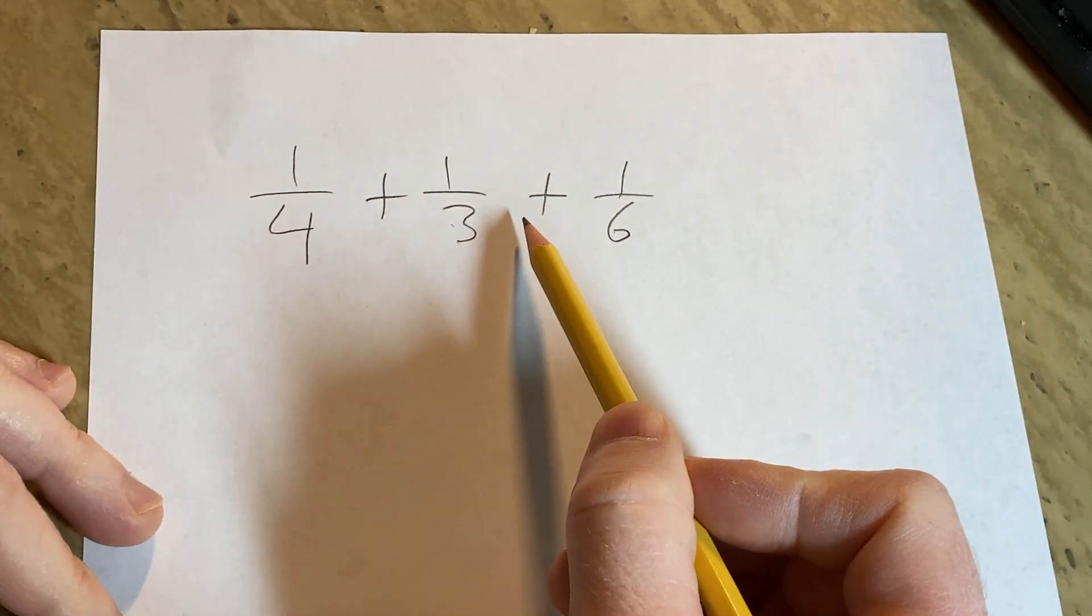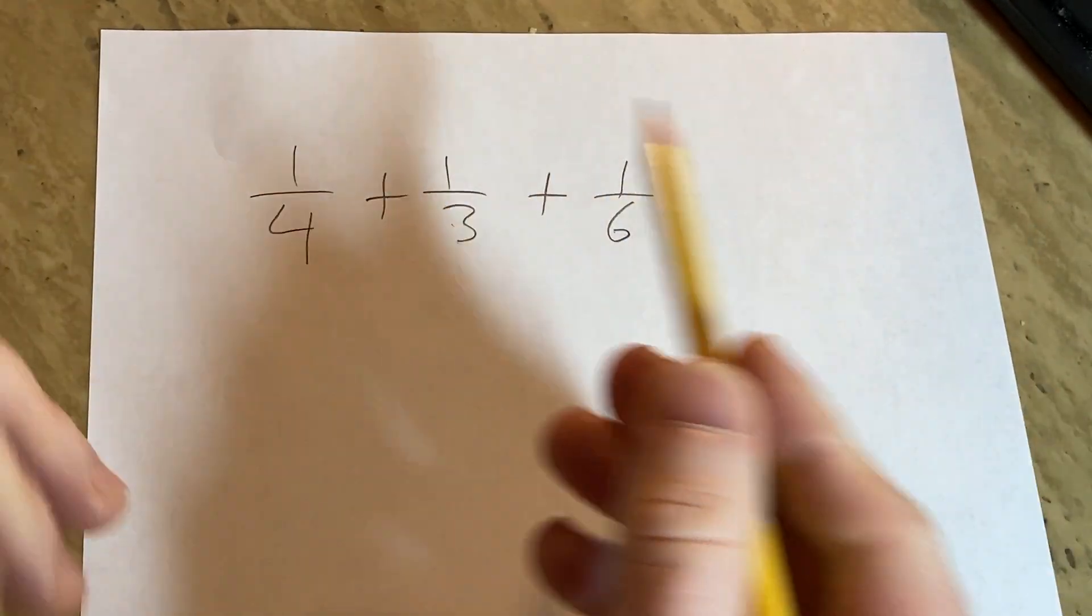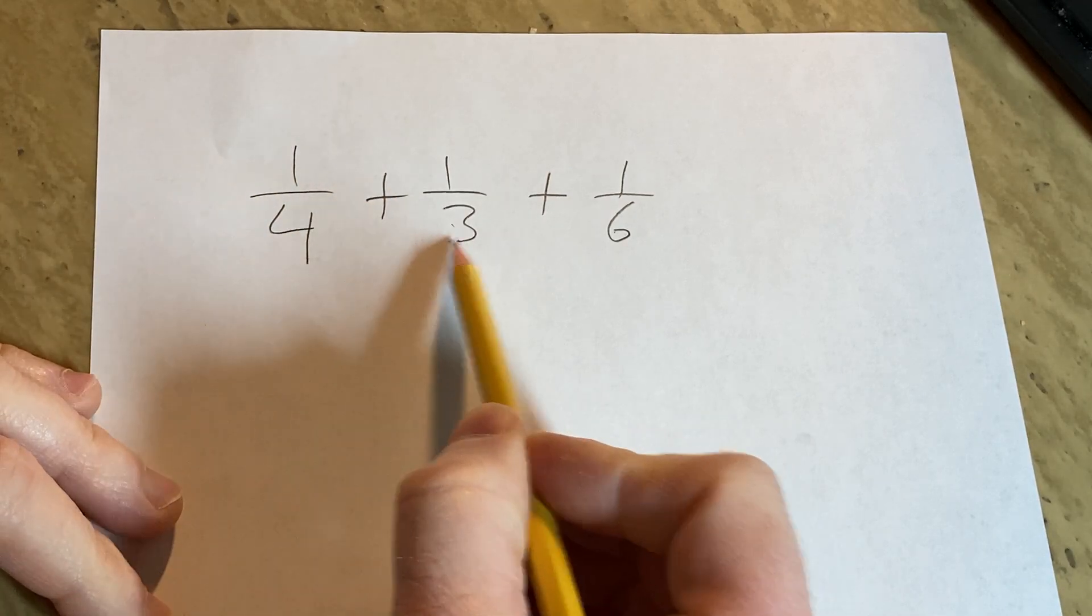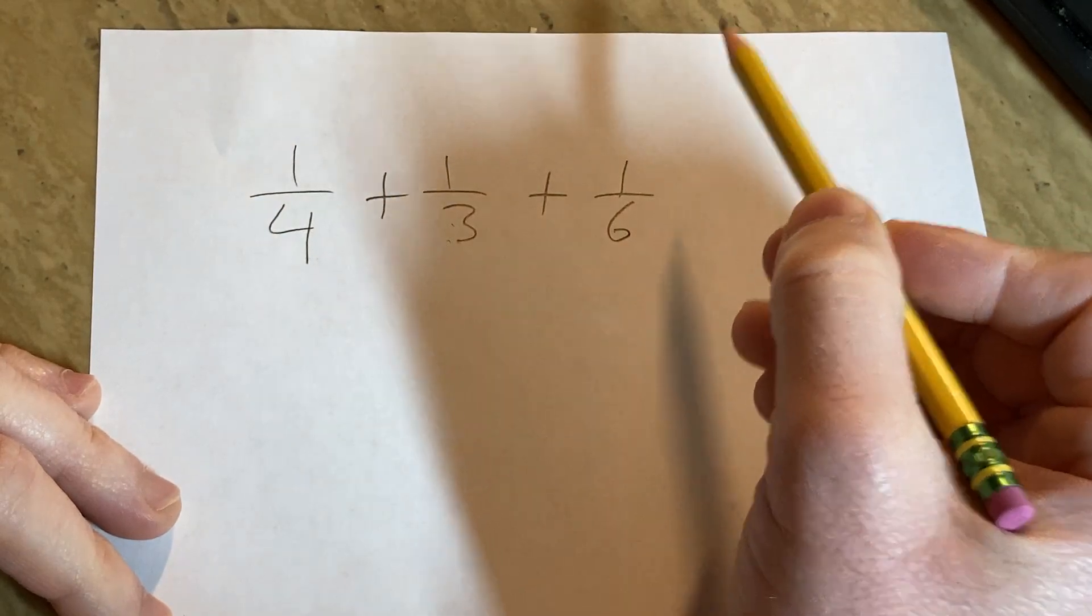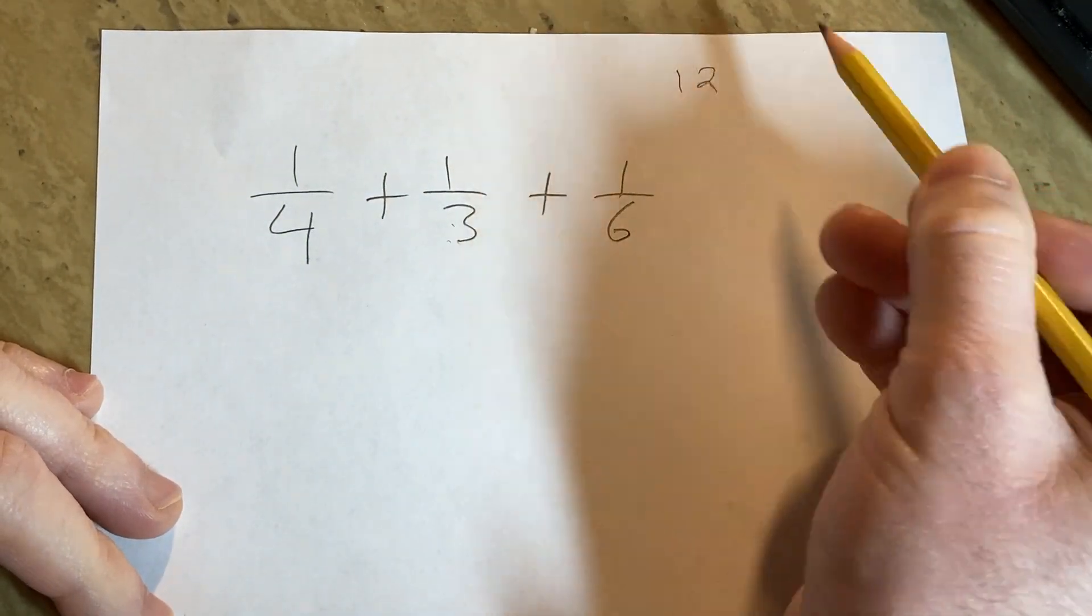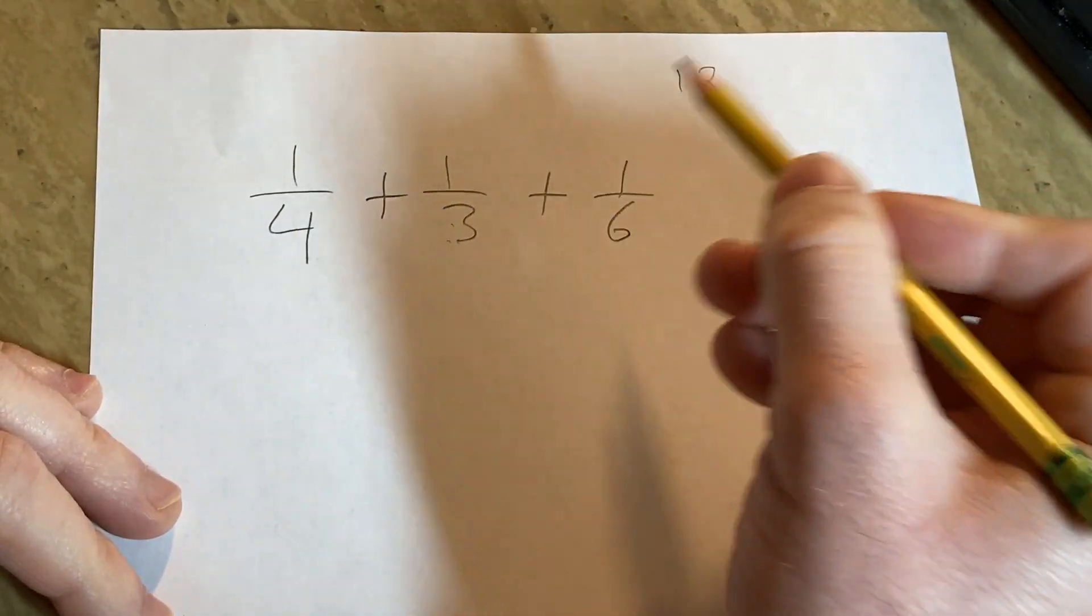12 is a number that can be achieved by using a 4, a 3, or a 6. So 12 is going to be our least common denominator.